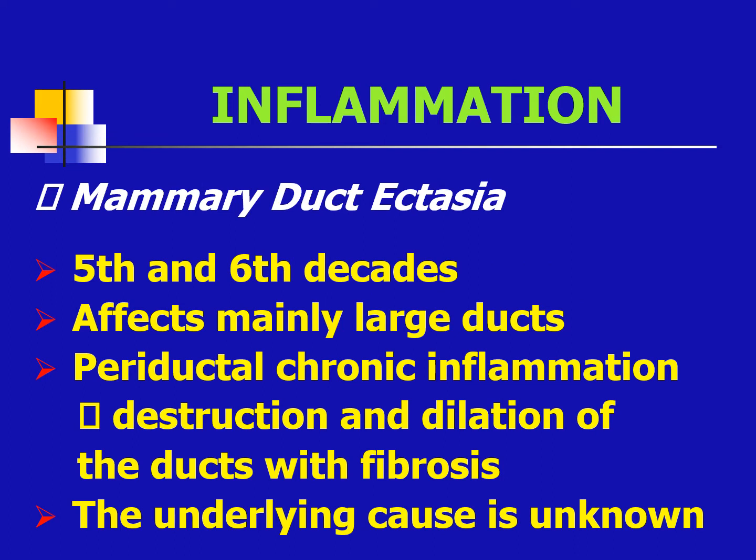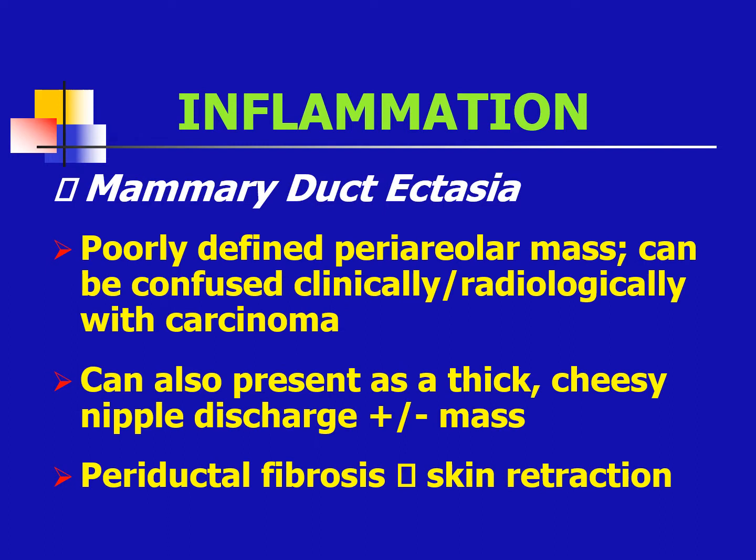Mammary duct ectasia occurs at the 5th and 6th decades of life. It affects mainly the large ducts with periductal chronic inflammation, destroying and dilating ducts with concomitant fibrosis. The underlying cause is unknown. It is a poorly defined periareolar mass which can be confused clinically and radiologically with carcinoma. It can also present as a thick, cheesy nipple discharge with or without a mass.